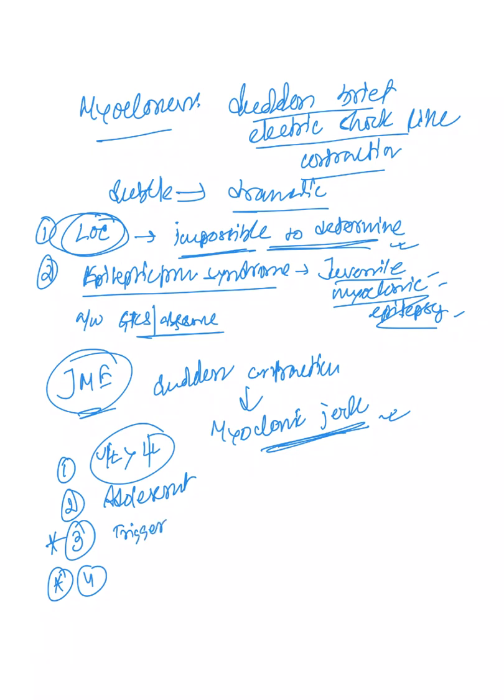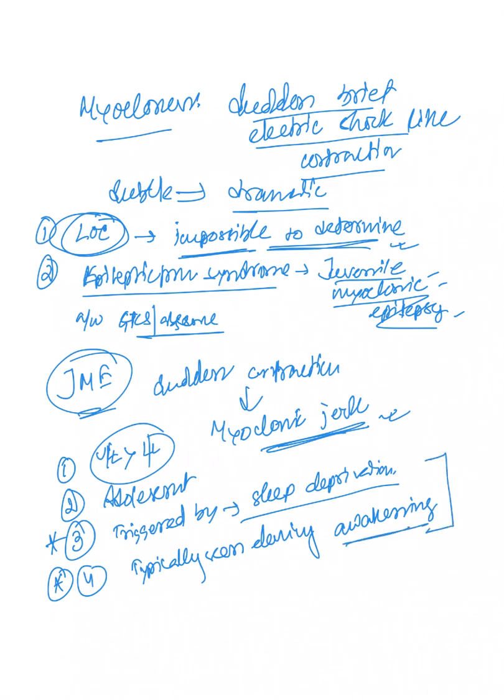The most important, most important factors - triggered by what? Triggered by sleep deprivation and typically seen during adolescence, and typically seen during awakening. These two facts will be mentioned in the question, and the answer is going to be Juvenile Myoclonic Epilepsy. It is triggered by sleep deprivation, typically seen during awakening. Just remember this, it is a very important fact.